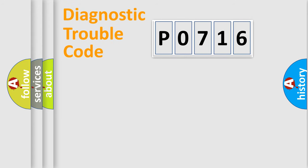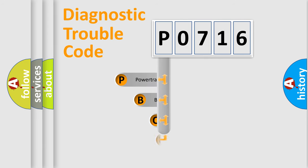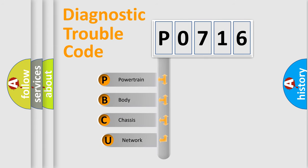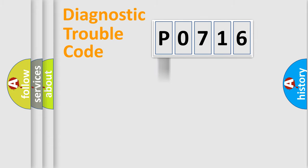Let's look at the history of diagnostic fault code composition according to the OBD2 protocol, which is unified for all automakers since 2000. We divide the electrical system of the automobile into four basic units: Powertrain, Body, Chassis, and Network.